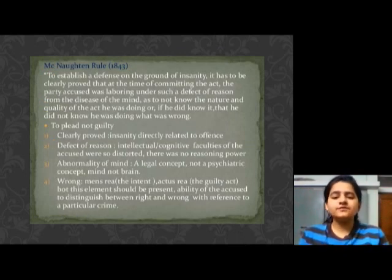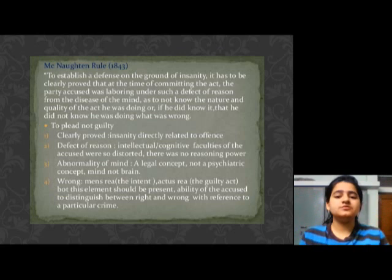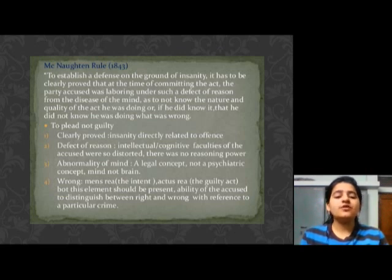McNaughton's Rule was given in 1843. According to the McNaughton Rule, the jurors are to be told in all cases that every man is to be presumed to be sane and to possess a sufficient degree of reason to be responsible for his crimes until the contrary be proved to their satisfaction. The central issue of this definition may be stated as: did the defendant know what they were doing, or if so, that it was wrong.